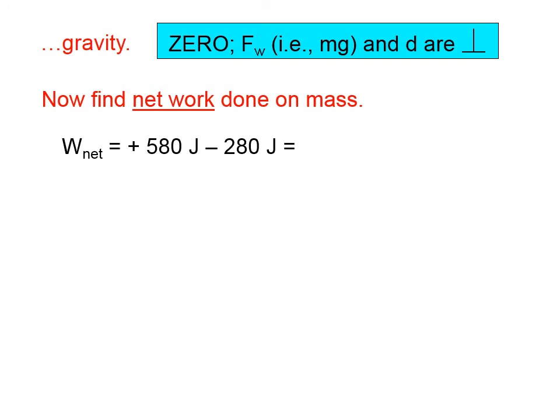In any case, the net work is the sum of all the work that's done on the mass. We determined that the applied force does 580 joules worth. Friction does negative 280 joules worth of work. In order to properly round that to two significant figures, that's 300 joules. We write it as 3.0 times 10 to the second joules.